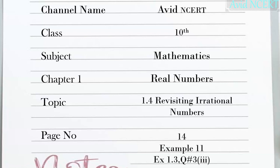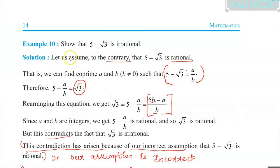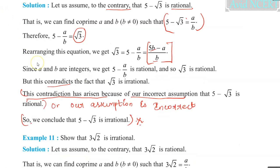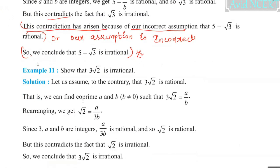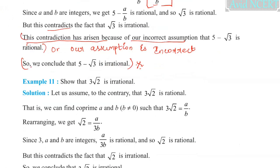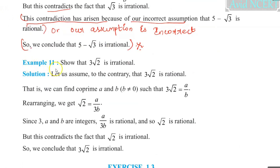Today we will be discussing Example 11 and Exercise 1.3 Question 3 from page number 14. We have completed Example 10. Now we will solve Example 11: Show that 3√2 is Irrational.